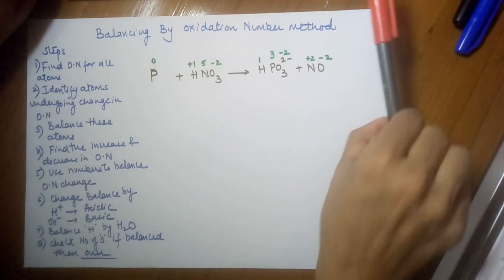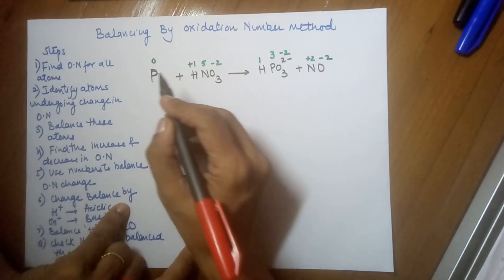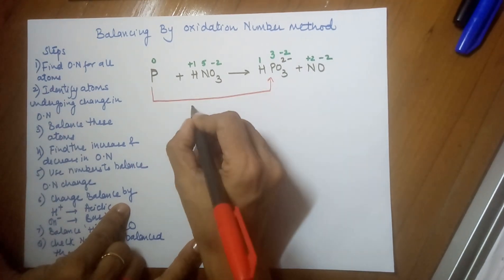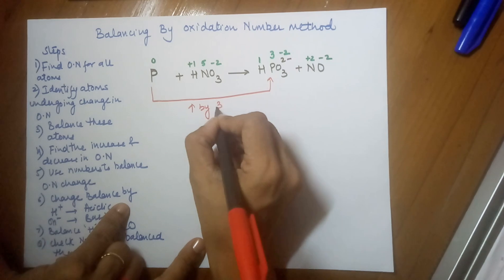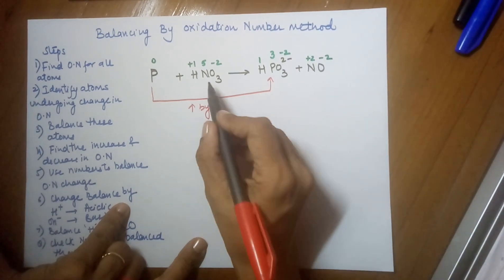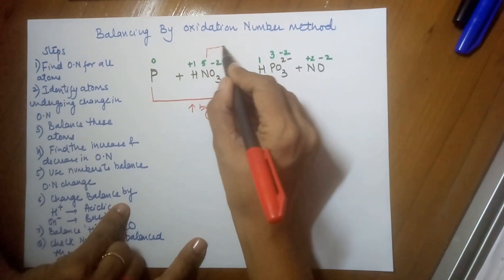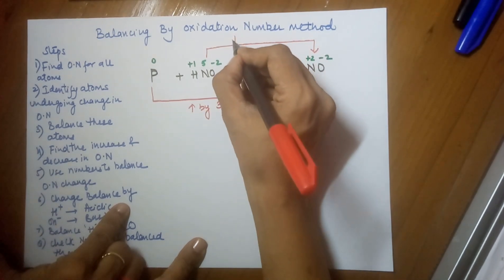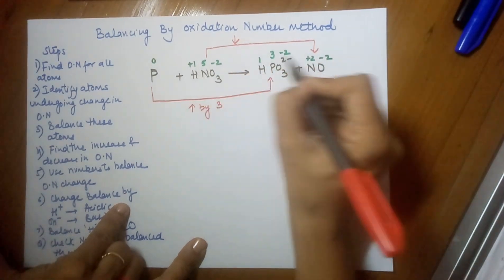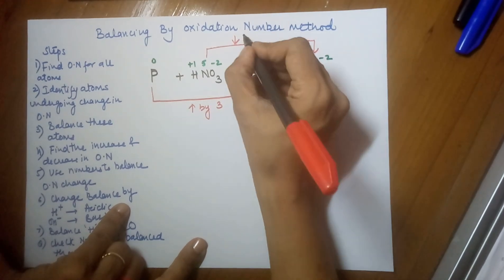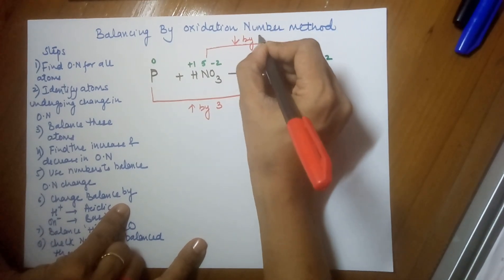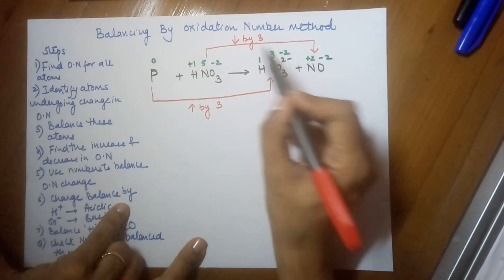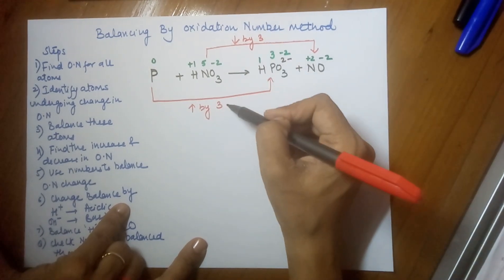Now step one is done. Step two: identify the atoms which have undergone a change in oxidation number. For phosphorus, there is an increase by three in the oxidation number. The second atom is nitrogen, which goes from plus five to plus two — a decrease in oxidation number by three.